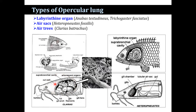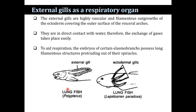In Clarias batrachus, the accessory respiratory organ consists of the suprabranchial chamber, air trees, air fan, and the respiratory membrane. The suprabranchial chamber lies just above the gill and is divided into two cup-like compartments lined by highly vascular respiratory membrane. Two beautiful rosettes, called the air trees, on each side of the head are supported by the second and fourth branchial arches. The primary gill lamellae of each gill arch are fused to form gill fan and gill plate, which consist of vascular areas that also subserve gaseous exchange.